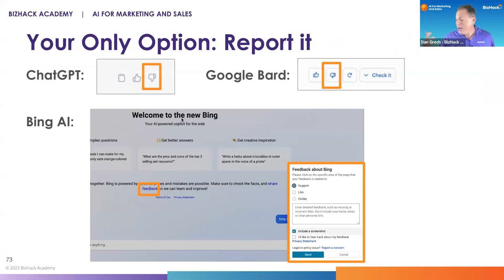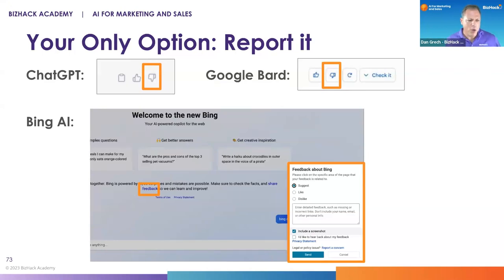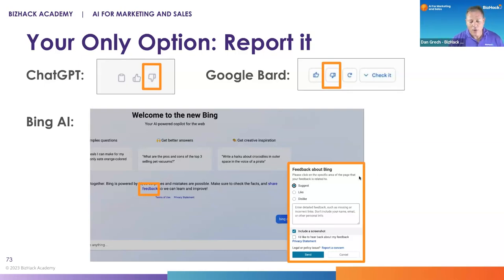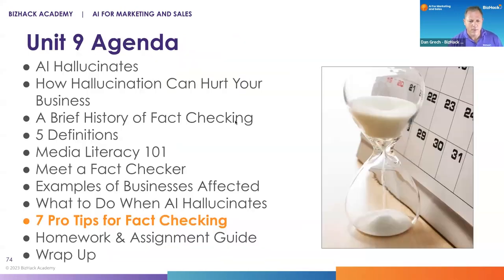So your only option right now is to report it. Generally, what you're looking for is the down thumb in Google Bard or ChatGPT. On Bing AI, they also have a feedback box where you can give feedback and screenshots about what's going wrong. But it's a bit of a black box — we don't really know how this information is being used, and there's no guarantee it won't continue to perpetuate the falsehoods.